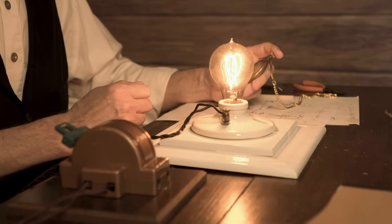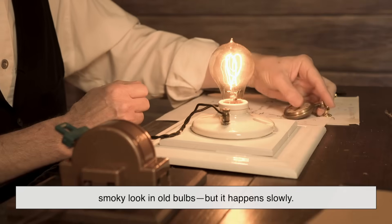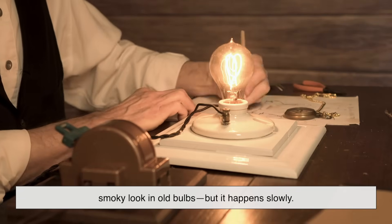Over time, of course, some of the tungsten still evaporates, leading to that darkened, smoky-looking old bulbs. But it happens slowly.